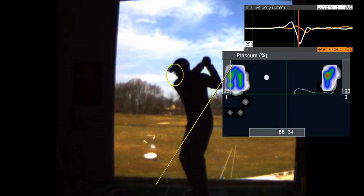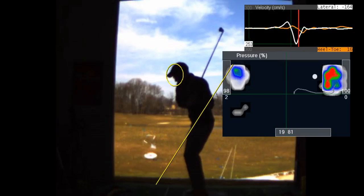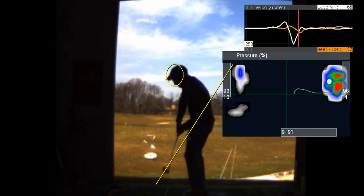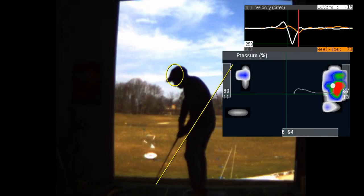And as you hit the ball, see this is your center of pressure, that little ball. Watch how it really goes into your lead leg there. That's good. You're generating a lot of force, 253 centimeters per second. So you're getting a lot of push from the ground. That's good.